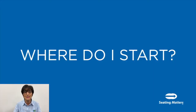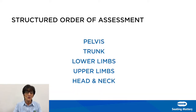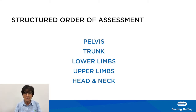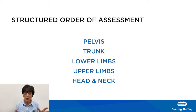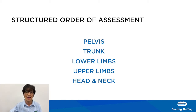Where do you start? We always start at the pelvis. This is the structured order of assessment — we talked in earlier seminars about the importance of the pelvis and getting it right, because the pelvis influences the position of the body above and below it. Getting the pelvis into the correct position is key to good seating. So we always start with the pelvis, then look at the trunk, then the lower limbs, the upper limbs, and then the head and neck.